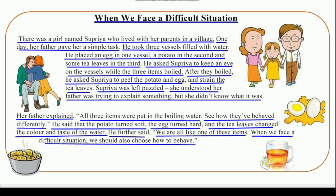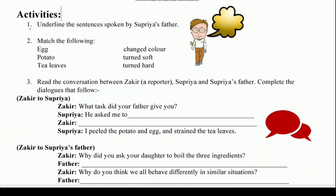Now we will move on to the activities which are based on this topic. The first activity is: underline the sentences spoken by Supriya's father. Supriya's father has certain sentences that you have to underline and write in your copy.